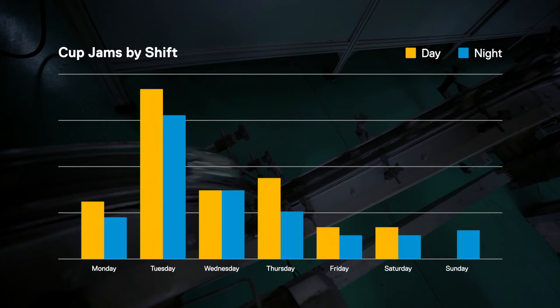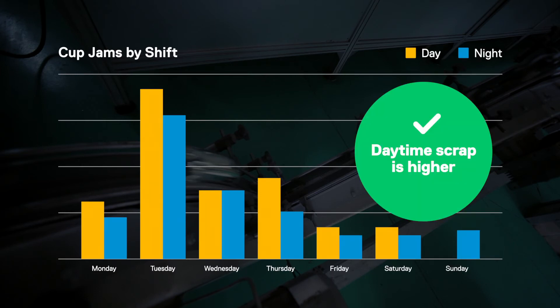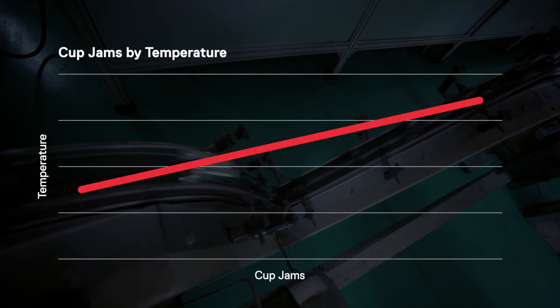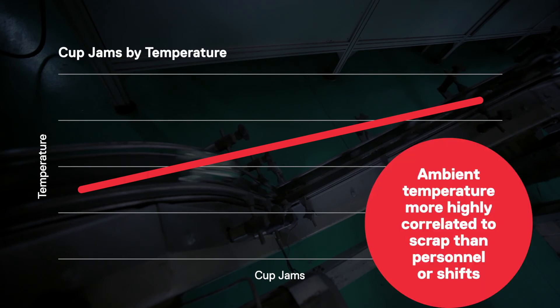The SiteMachine platform allowed the team to quickly verify scrap differences by shift. The day shift did indeed have higher scrap. However, the SiteMachine platform and analytic applications allowed them to quickly take this further by performing an analysis of what was causing this. In this case, real-time data determined that daytime ambient temperature differences had higher correlation to scrap versus personnel or shift.